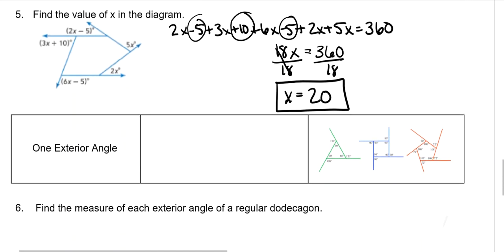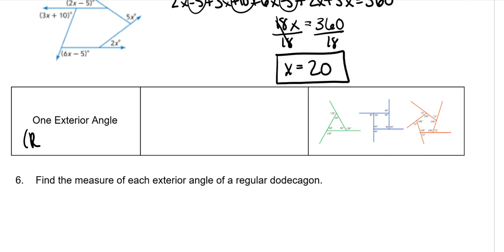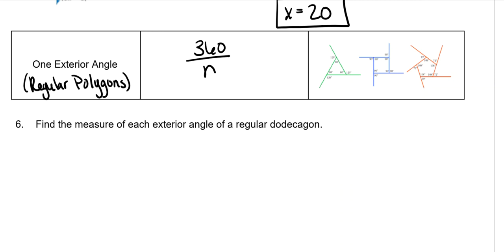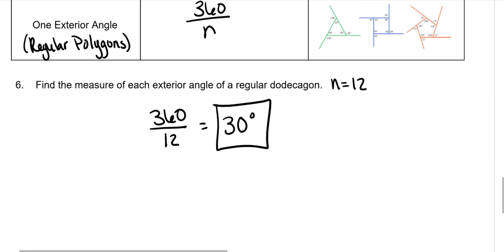If you need one exterior angle of a regular polygon, this only works for regular polygons. Remember, those are polygons with equal sides and equal angles. Then you just take 360 and divide it by the number of sides. Find the measure of each exterior angle of a regular dodecagon. Remember, that means n is 12. And then we do 360 divided by 12 which is 30 degrees. So each exterior angle of a dodecagon would be 30 degrees. And that's the end of our notes.